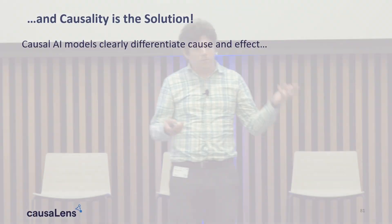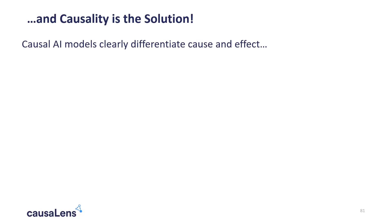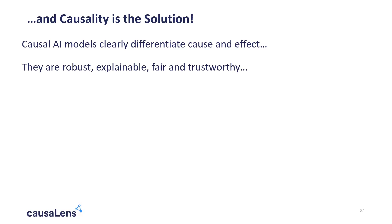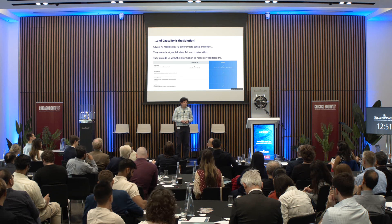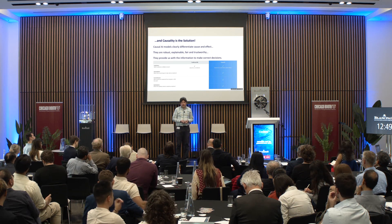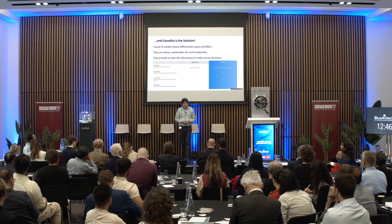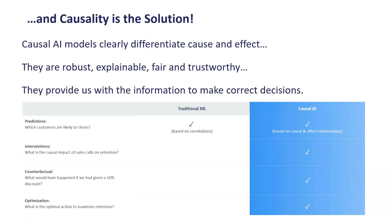Causal AI models differentiate the notion of cause and effect — it's built into these models. These models are robust, they are fair, humans can understand them, and they provide a way to make decisions. Whereas classic machine learning gives you some notions of prediction, causal models can answer more questions than that.